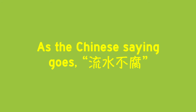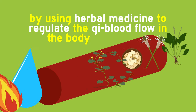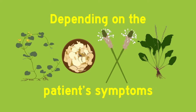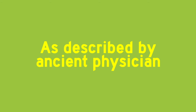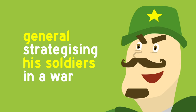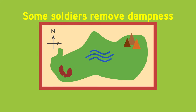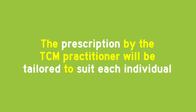So, how do TCM physicians treat it? As the Chinese saying goes, running water never goes still, TCM applies this to treat UTI by using herbal medicine to regulate the qi and blood flow in the body. Depending on the patient's symptoms, the herbs prescribed will be tailored to help achieve yin and yang balance in the body. As described by an ancient physician, TCM practitioners will use medications similar to a general strategising his soldiers in a war — some soldiers will remove dampness, some to remove heat, while others will nourish the kidneys. The prescription will be tailored to suit each individual.